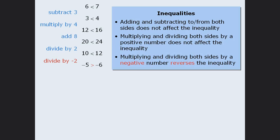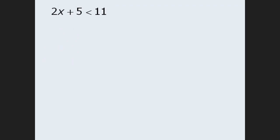If we multiply or divide both sides by a negative number, we must reverse the direction of the inequality. Let's try an example. Solving this inequality means finding all values for x that make the inequality a true statement. To do this, we need to isolate the variable x. We'll first subtract 5 from both sides to get 2x is less than 6, and then divide both sides by 2 to get x is less than 3. This means the solution to the inequality 2x plus 5 is less than 11 consists of any value of x that is less than 3.